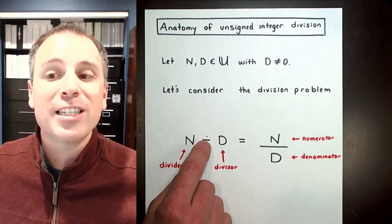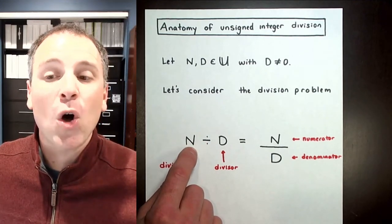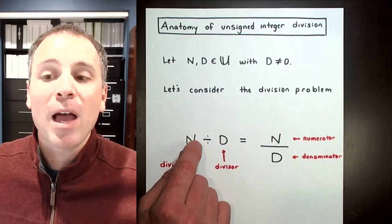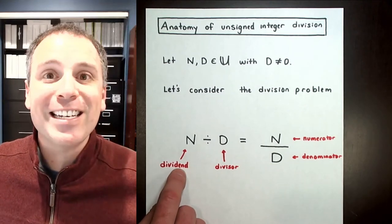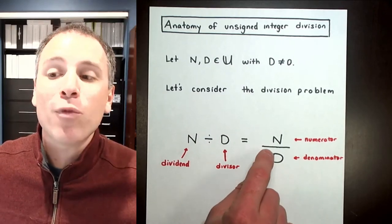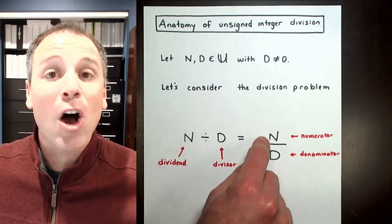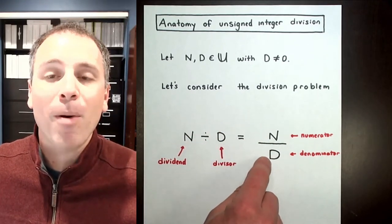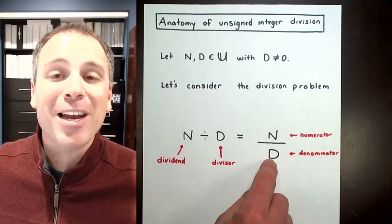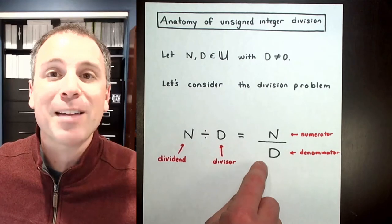We're going to consider the anatomy of a division problem in two separate ways. One uses the division symbol, which is a binary operator. The operand on the left-hand side is capital N, called the dividend, and the operand on the right-hand side is capital D, called the divisor. If we express this using the fraction bar, N goes on top as the numerator and D goes on the bottom as the denominator. In other words, dividends are the same things as numerators, and divisors are the same thing as denominators.